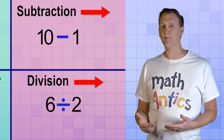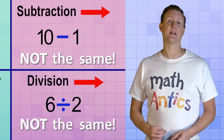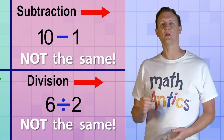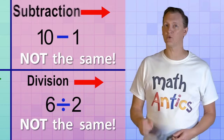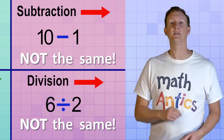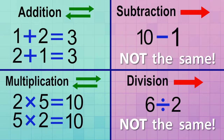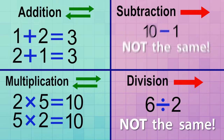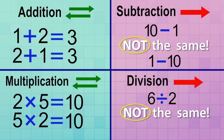That means you have to pay close attention to the order of the numbers in a subtraction or division problem to make sure you're working the right problem. For example, taking 1 away from 10 is NOT the same as taking 10 away from 1. And dividing 6 into 2 groups is NOT the same as dividing 2 into 6 groups.